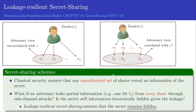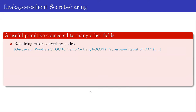Is the secret still hidden given the leakage? In other words, is the joint distribution of the leakages B1, B2, ..., BN uncorrelated with the secret S? A secret sharing scheme is leakage resilient if the secret remains hidden. So why are we interested in leakage resilient secret sharing? In fact, leakage resilient secret sharing is a very useful primitive.